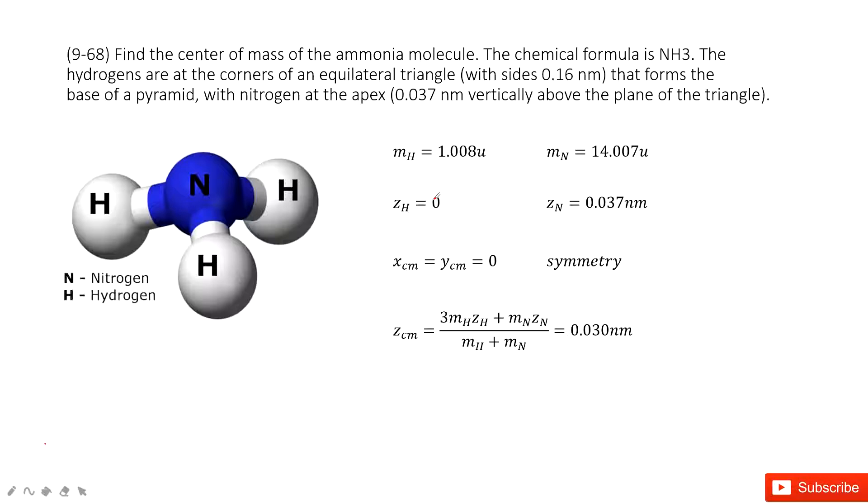In this chapter, we will talk about linear momentum. As you can see, we have the ammonia molecule. It has one nitrogen atom and three hydrogen atoms.